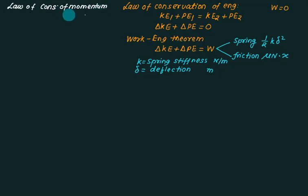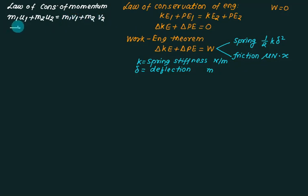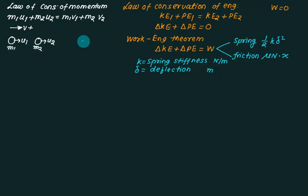The law of conservation of momentum states that momentum is always conserved: initial momentum equals final momentum. For two bodies, initial momentum is m1u1 plus m2u2, and final momentum is m1v1 plus m2v2, where u1 and u2 are initial velocities. The sign convention is: rightward velocity is positive and leftward is negative. Before impact is the initial condition; after impact is the final condition.